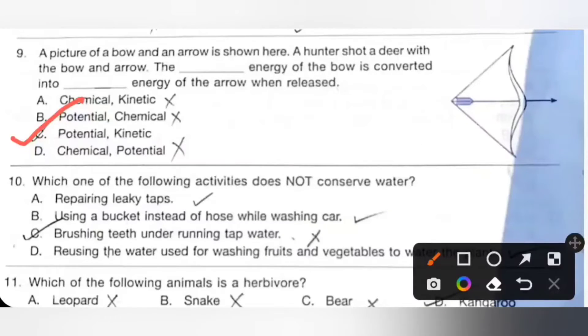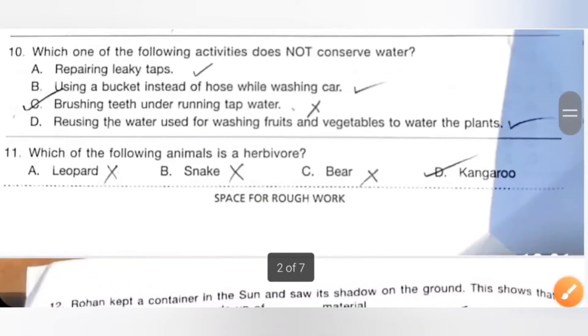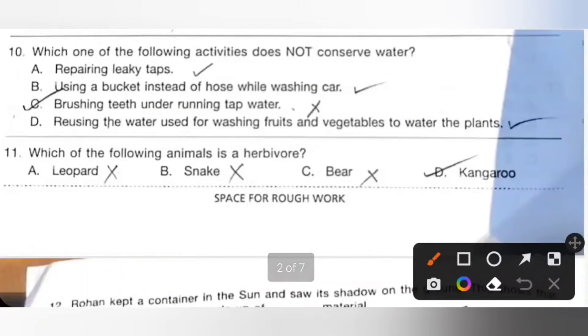Tenth one: Which one of the following activities does not conserve water? Option A: Repairing leaky taps, definitely it will conserve water. B: Using a bucket instead of hose while washing car, it is also correct way to conserve water. C: Brushing teeth under running water. We should not do this one, it doesn't conserve any water. We should save water. So option C is the correct answer.